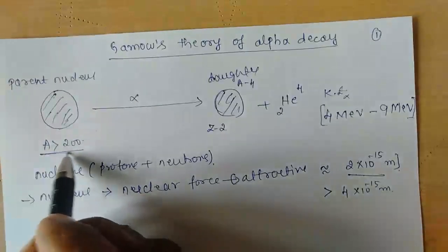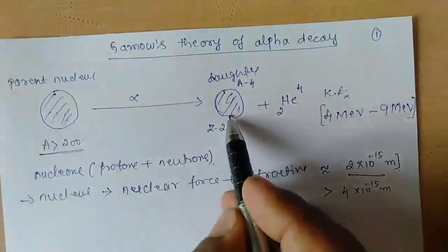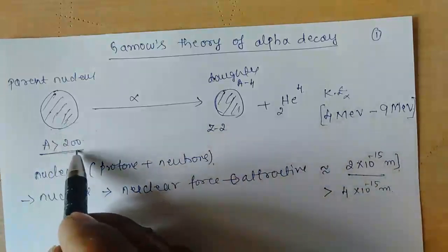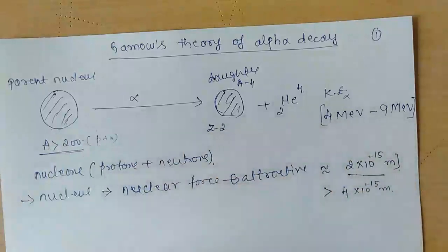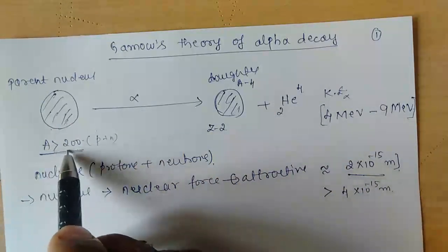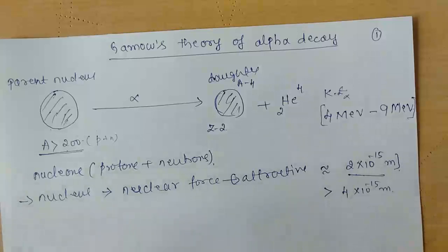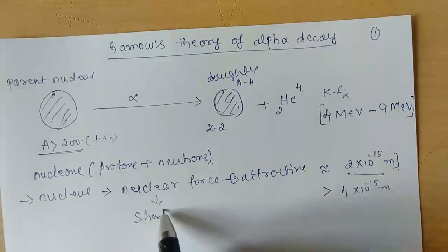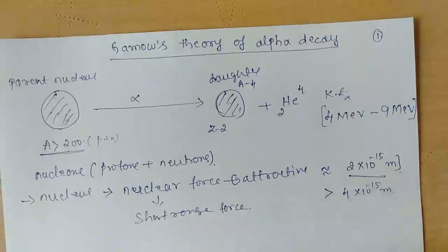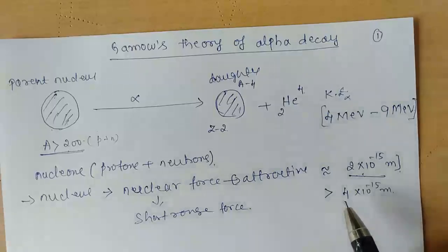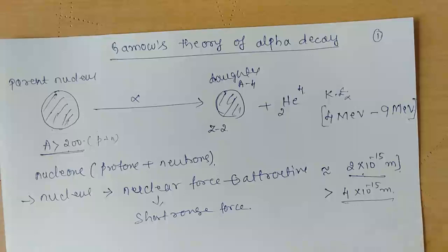Alpha decay is possible only in nuclei whose mass number is greater than 200. In a bigger nucleus, as the size increases the nuclear force between nucleons goes on decreasing, because the nuclear force is a short-range force. Beyond that distance the nuclear force is completely negligible, so the Coulomb force becomes more predominant than the nuclear force.